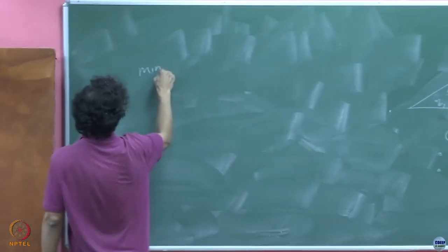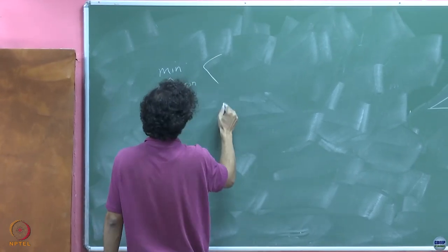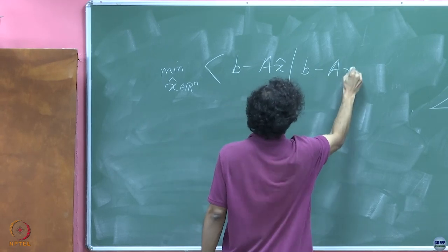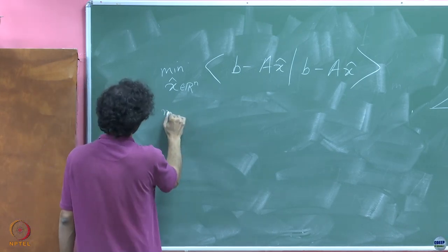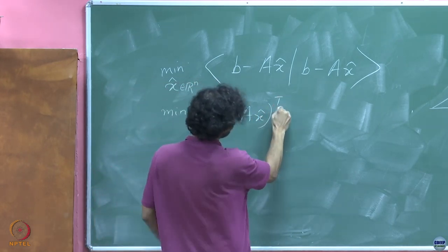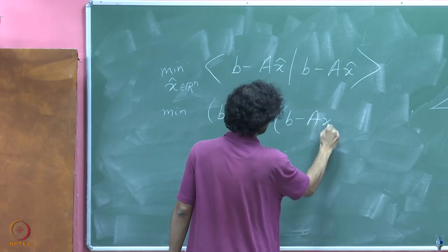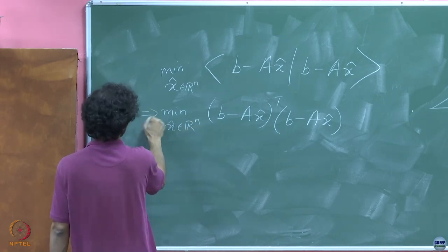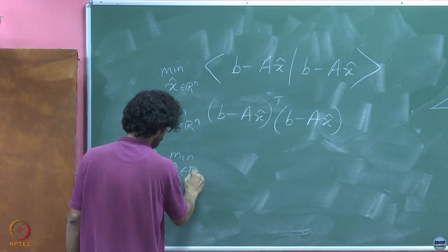What we are trying to do is minimize over x̂ belonging to R^n the inner product of b minus A x̂ with itself, which essentially means minimize (b minus A x̂) transposed times (b minus A x̂) over x̂ in R^n, which is tantamount to minimization over x̂ belonging to R^n.